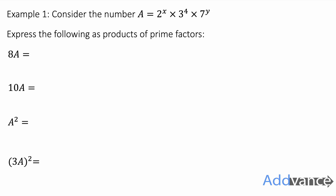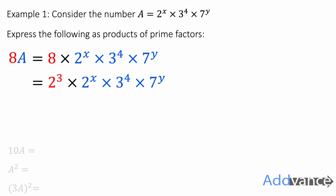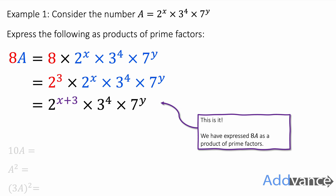Consider the number a = 2 to the power of x times 3 to the power of 4 times 7 to the power of y. Let's focus on 8a first — this is 8 times our number. So we write it as 8 times 2 to the power of x times 3 to the power of 4 times 7 to the power of y. We can rewrite 8 as 2 cubed, giving us 2 cubed times 2 to the power of x. When we multiply the same base, we add the powers, so this becomes 2 to the power of x plus 3. The final answer is 2 to the power of (x+3) times 3 to the power of 4 times 7 to the power of y.